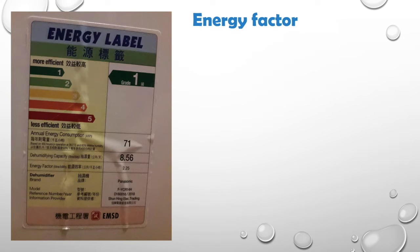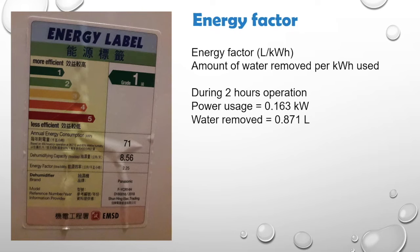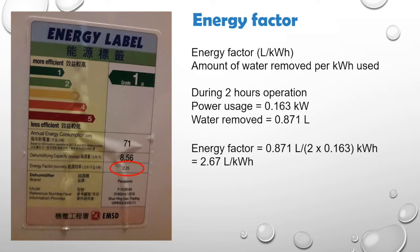Now that we know the power usage and the amount of water that is collected, we can also estimate the energy factor for the 2-hour period, which is about 2.67 liters per kWh, slightly better than the value given on the energy label.